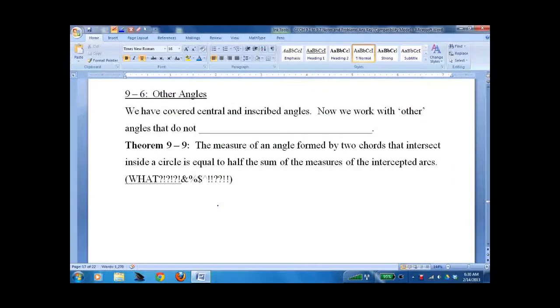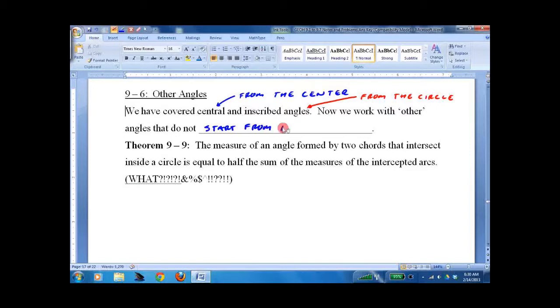So far we've covered central angles, which are angles from the center of the circle, and inscribed angles, which are angles from the circle itself. Now we have other angles. These are angles that do not start from the center or edge of the circle.